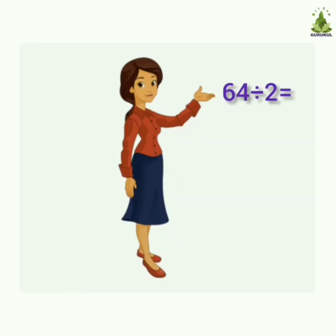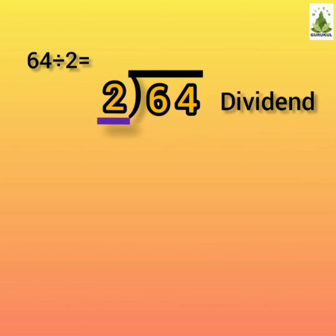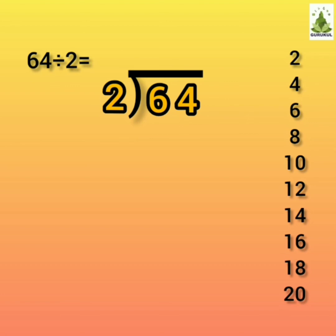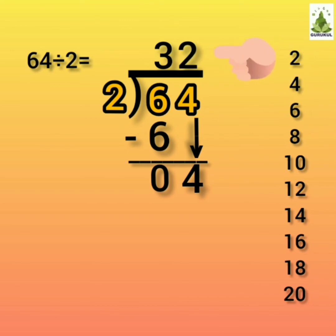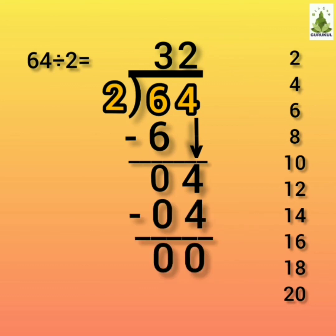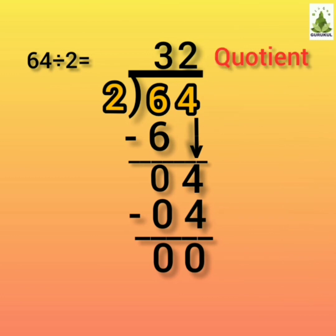Solve 64 divided by 2. Here, 64 is the dividend and divisor is 2. Divide 6 tens by 2. Say the table of 2 to get product 6. 2 how much are 6? Teacher, 2 threes are 6. Write 3 above the line and 6 down. 6 tens minus 6 tens — answer is 0 tens. Write 4 units down and perform division. Divide 4 by 2. 2 how much are 4? Teacher, 2 twos are 4. Write 2 above the line in the units place of the quotient. Write 4 down. 4 units minus 4 units — answer is 0 units. Quotient is 32 and remainder is 0. Hence, 64 divided by 2 is 32.